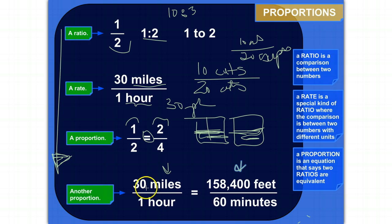So 30 miles per hour is equivalent to 158,400 feet per 60 minutes. This is really the value of proportions - I can convert between different units and see how things are equivalent and compare them.